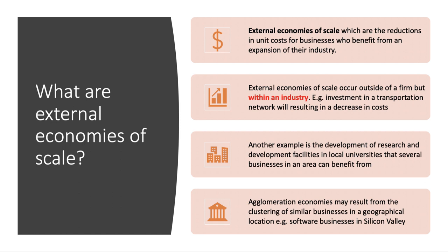So that's internal economies of scale. External economies of scale are the reductions in average cost for businesses that benefit from an expansion of the industry of which they are a member. The key point is that external economies of scale occur outside of a firm but within an industry or sector. A classic example: all firms in an industry might benefit from improvements in transportation networks — investment in new road and light rail, for example.